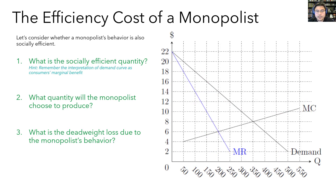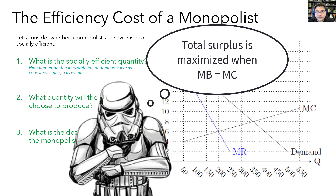Now let's talk about the implications of monopolies for society — in particular whether the behavior of a monopolist results in a socially efficient outcome, or in other words whether it maximizes total surplus in the market. We found that for a perfectly competitive market, the selfish profit maximizing behavior of firms does indeed lead to a socially efficient outcome. The question now is whether or not the same is true for monopolists. Total surplus to society is going to be maximized when the marginal benefit to society equals the marginal cost to society.